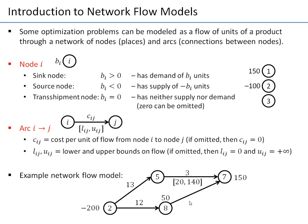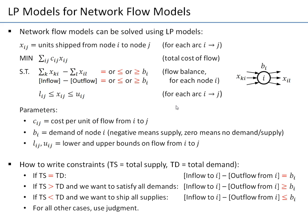The important reason we discuss network flow models is that they are a special case of linear programming models and can be solved as LP. For any network flow model you can formulate an LP by defining xij as the decision variable representing how many units are shipped from node i to node j. For every arc in the network there is one decision variable.